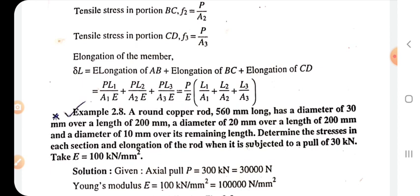Delta L = PL1/A1E + PL2/A2E + PL3/A3E. P/E is common, so delta L = (P/E)(L1/A1 + L2/A2 + L3/A3). This is the formula.